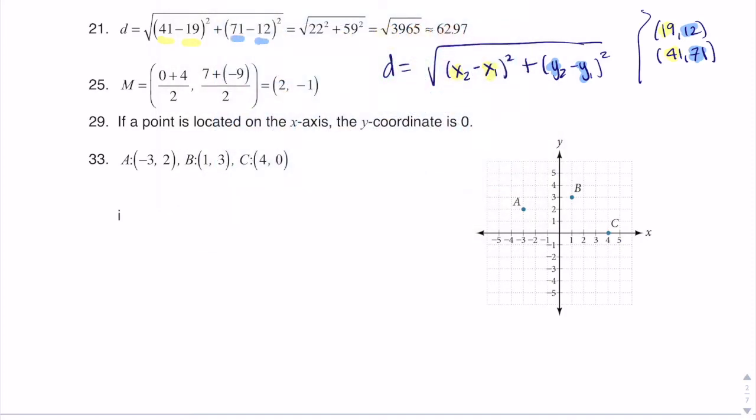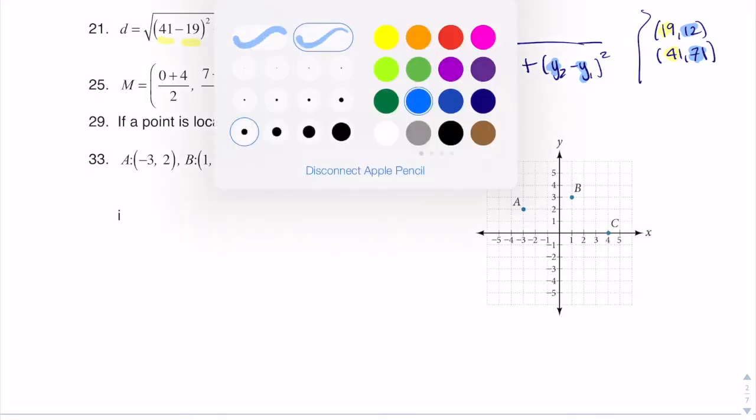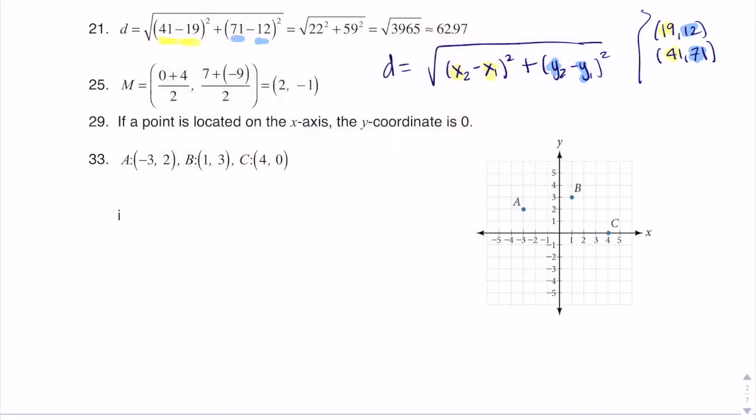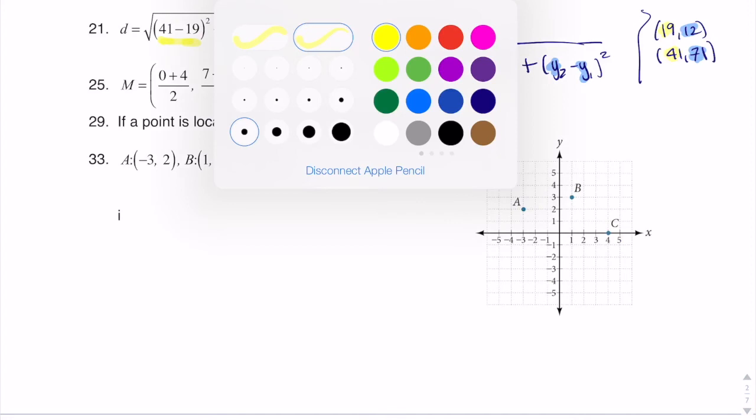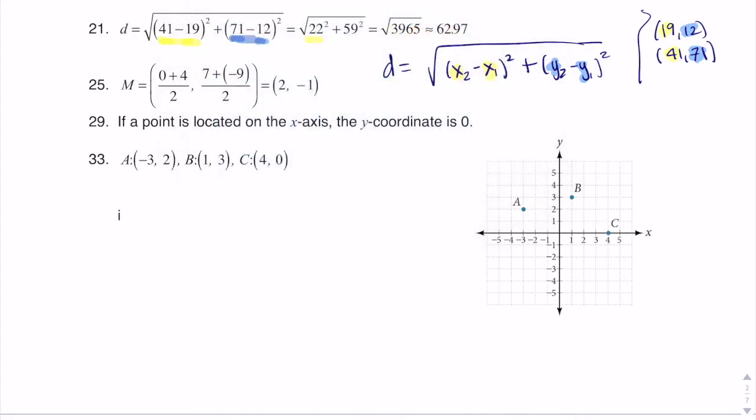And when I crunch that out, 41 minus 19 is 22. And then 71 minus 12, sure enough, is 59. Now when I square that on my calculator, I get this number.